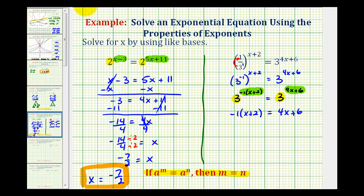Let's clear our parentheses by distributing. We'll have negative x minus 2 equals 4x plus 6. Let's add x to both sides of the equation, and at the same time, subtract 6.